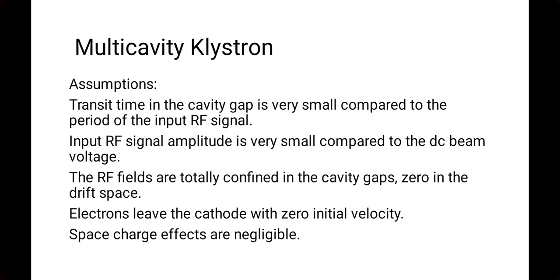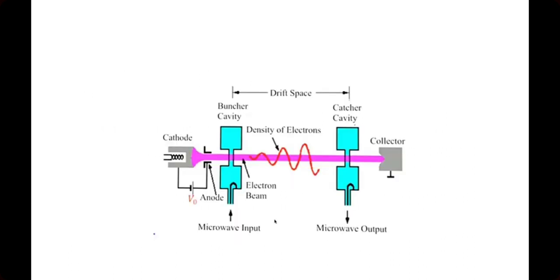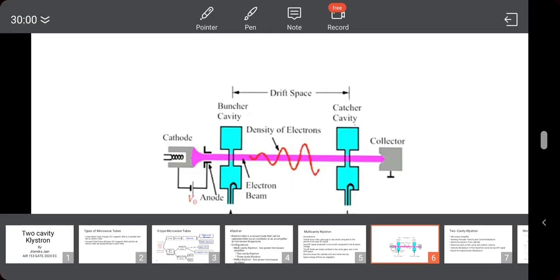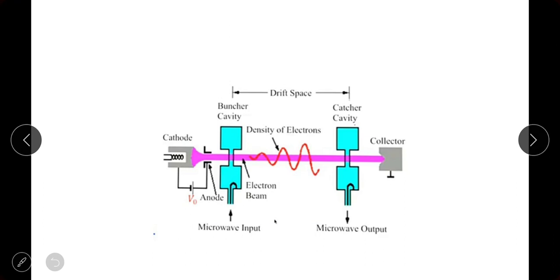First assumption: the transit time in the cavity gap is very small compared to the period of the input RF signal — this was a limitation of the conventional tube. Transit time is the time required for the electron to pass through the buncher cavity. We assume the transit time is less than the time period of the input RF signal.